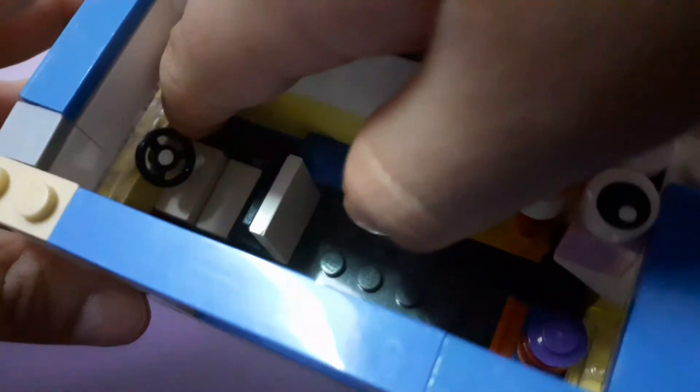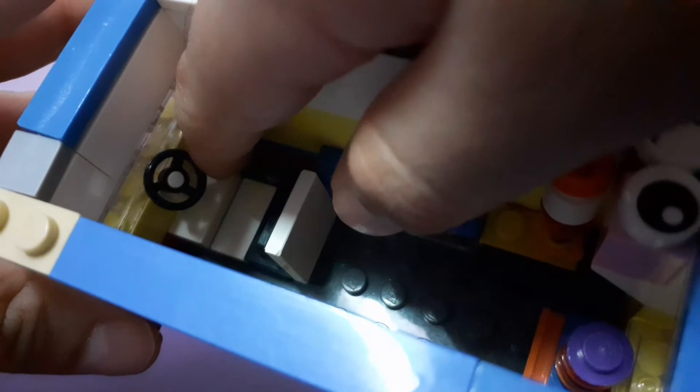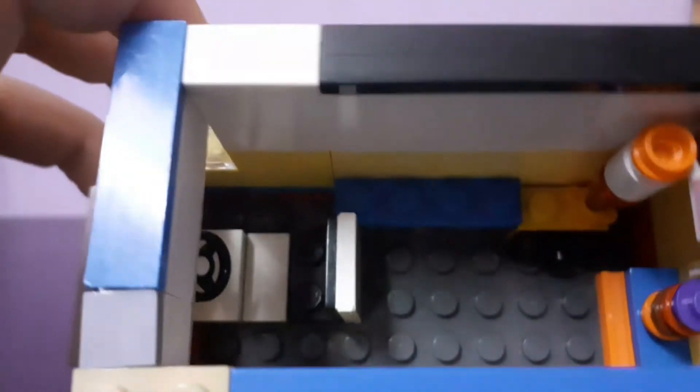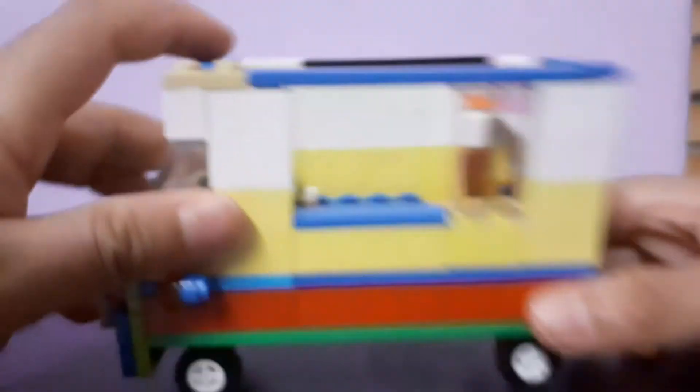Over here there is a steering wheel. Here you can put your minifigure. I made this chair by my own, this chair is really cool, yeah I like that chair.